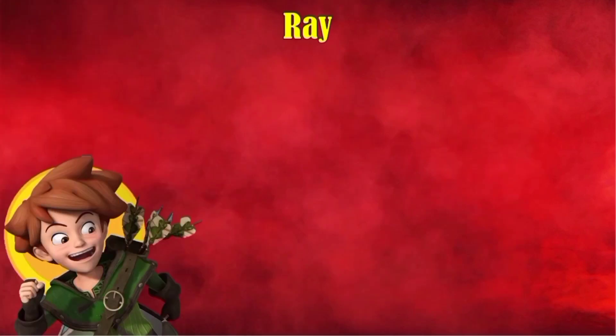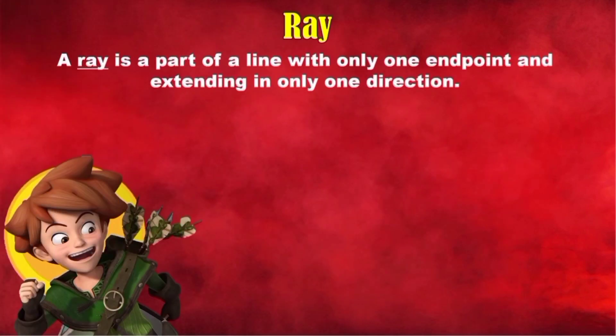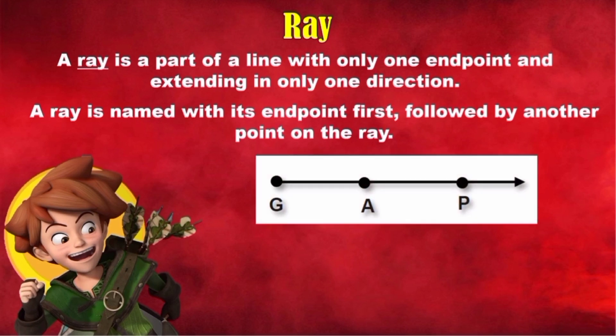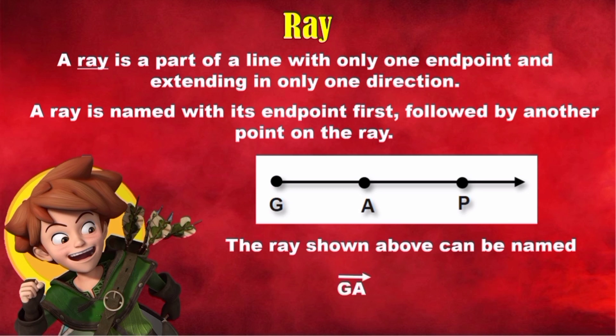Ray. A ray is a part of a line with only one endpoint and extending in only one direction. A ray is named with its endpoint first, followed by another point on the ray. Now, here is an illustration of a ray. The ray shown above can be named ray GA, ray GP, and ray AP.